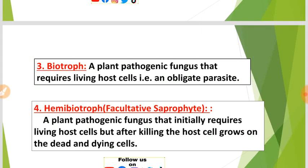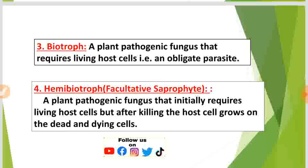Number three: Biotroph. A biotroph is a plant pathogenic fungus that requires living host cells — that is, an obligate parasite. Biotrophs are obligate parasites; they depend on living hosts.